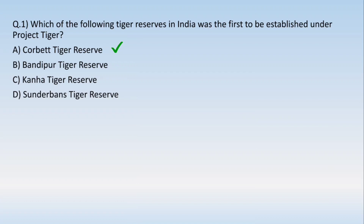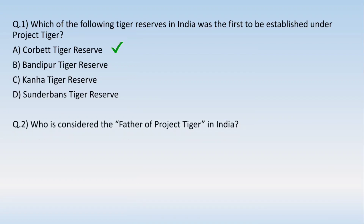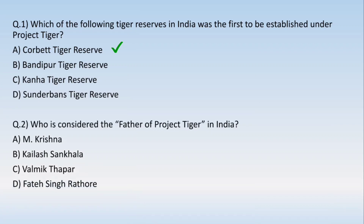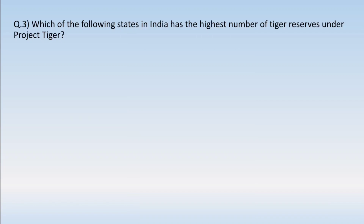Corbett is also one of the oldest tiger reserves in our country. Second question: who is considered the Father of Project Tiger in India? Options are: (A) M. Krishna, (B) Kailash Sankala, (C) Valmik Thapar, or (D) D. Fate Singh Rathore. If you remember, we discussed Kailash Sankala in the starting session — he had spoken to our former Prime Minister about Project Tiger, which is why he is called the Father of Project Tiger.